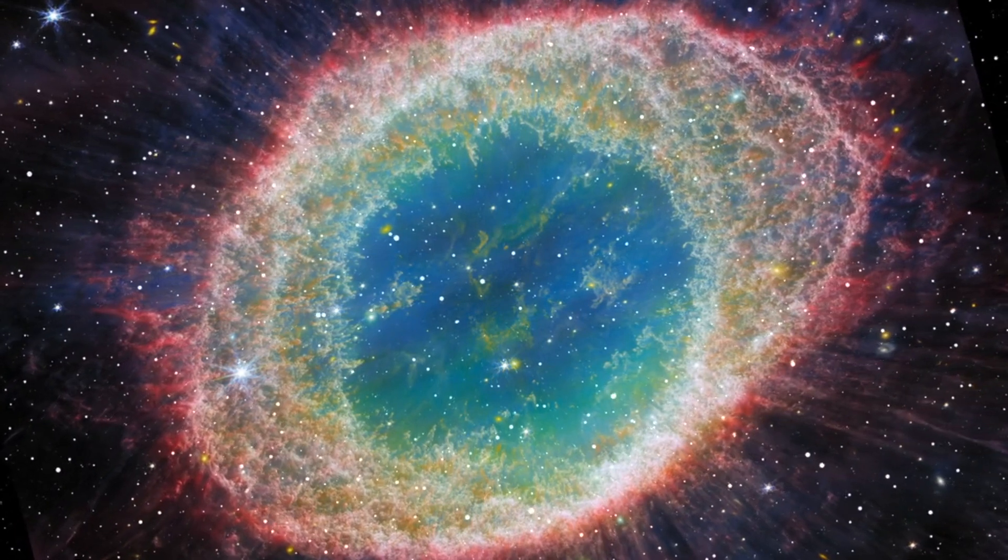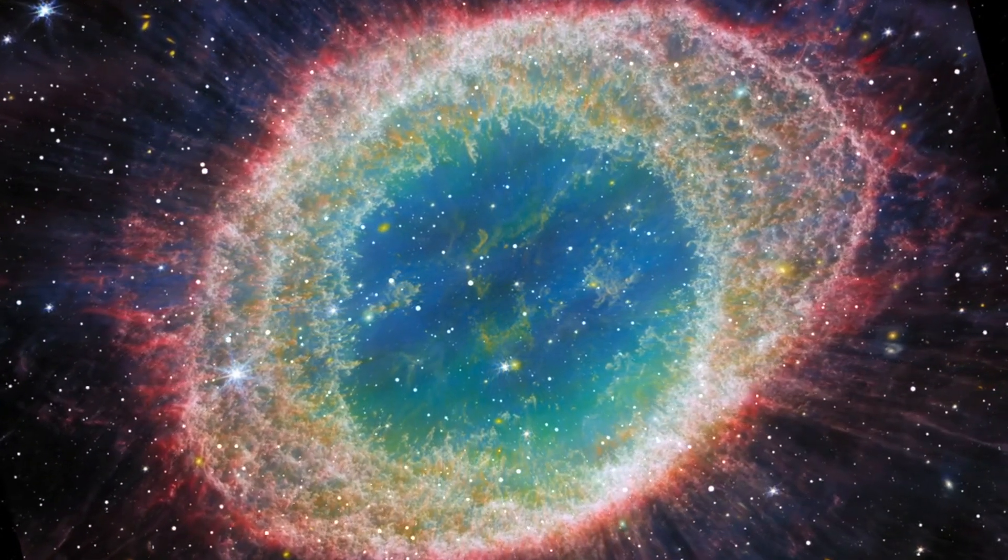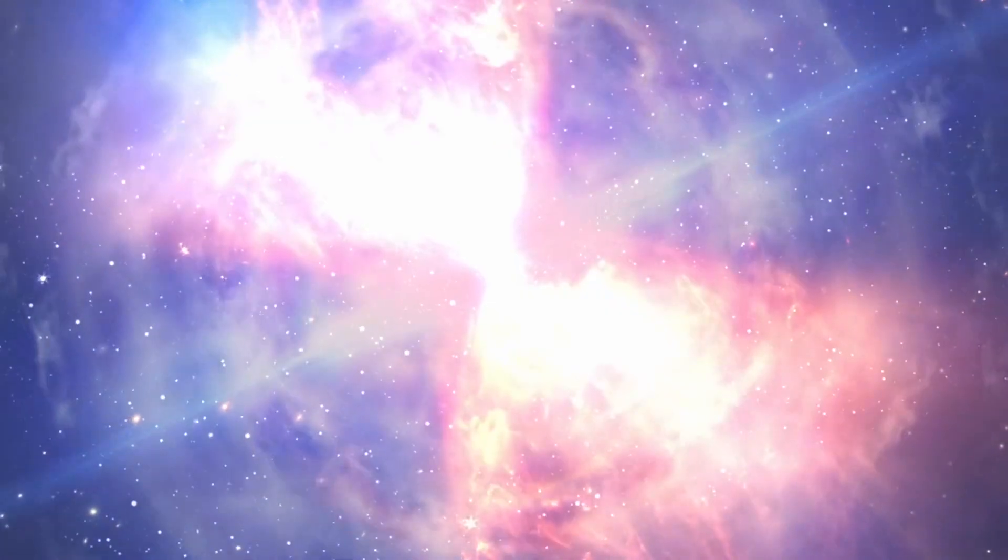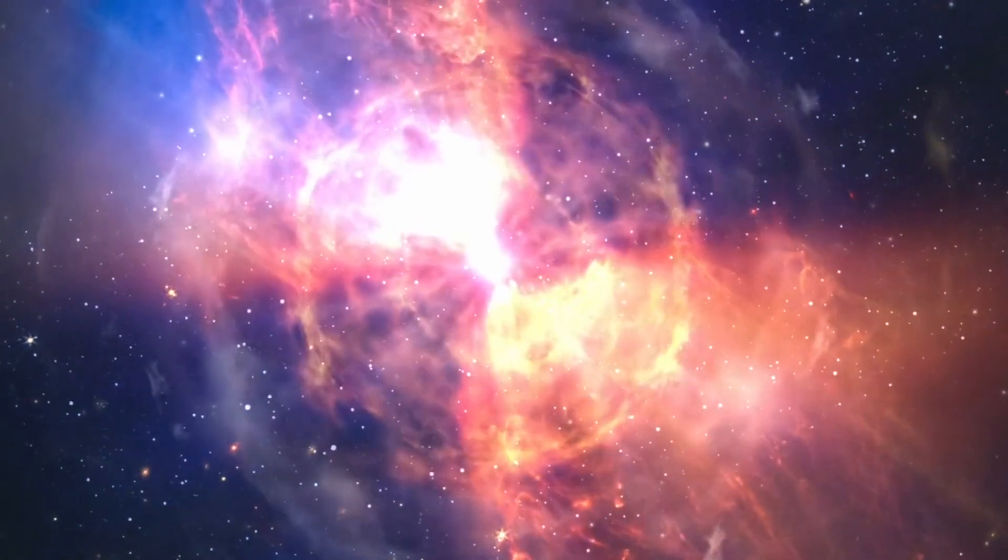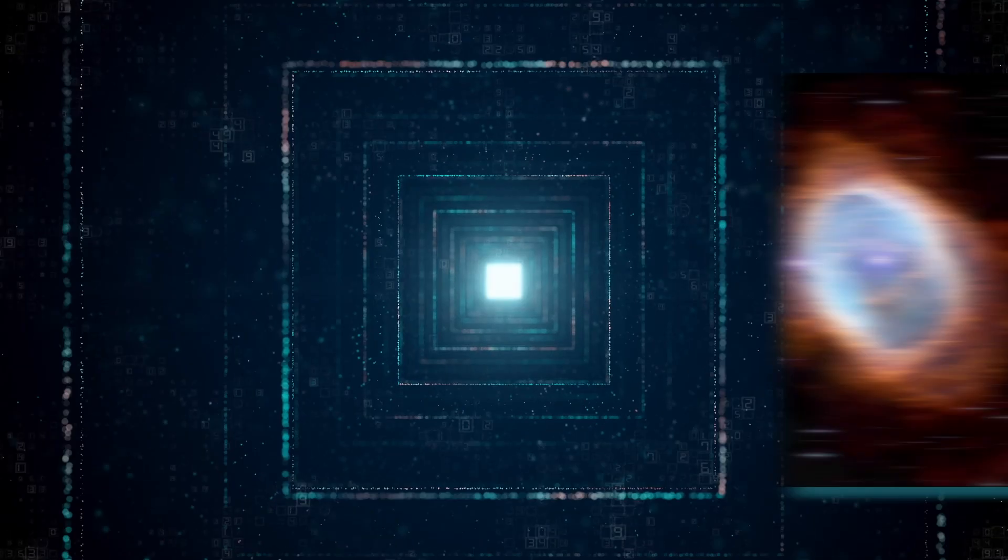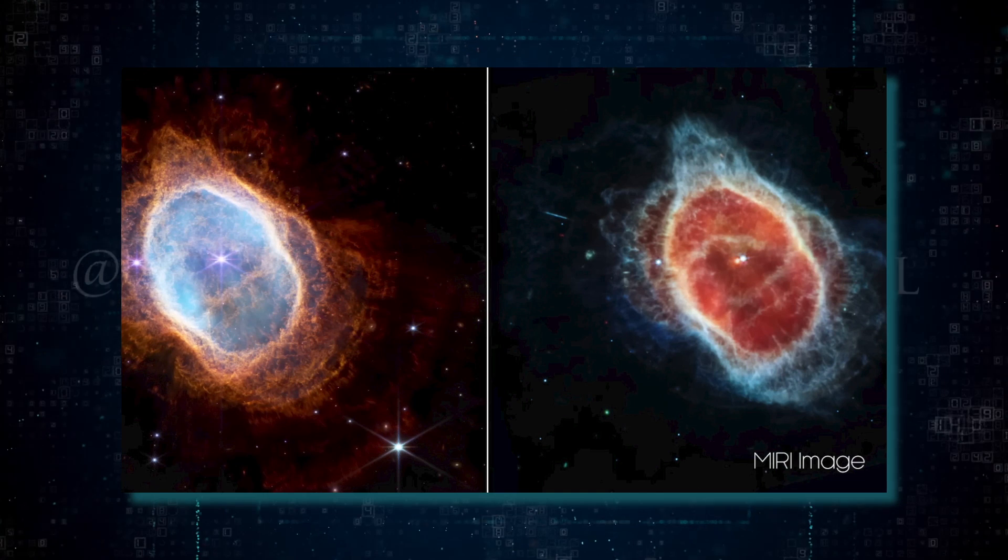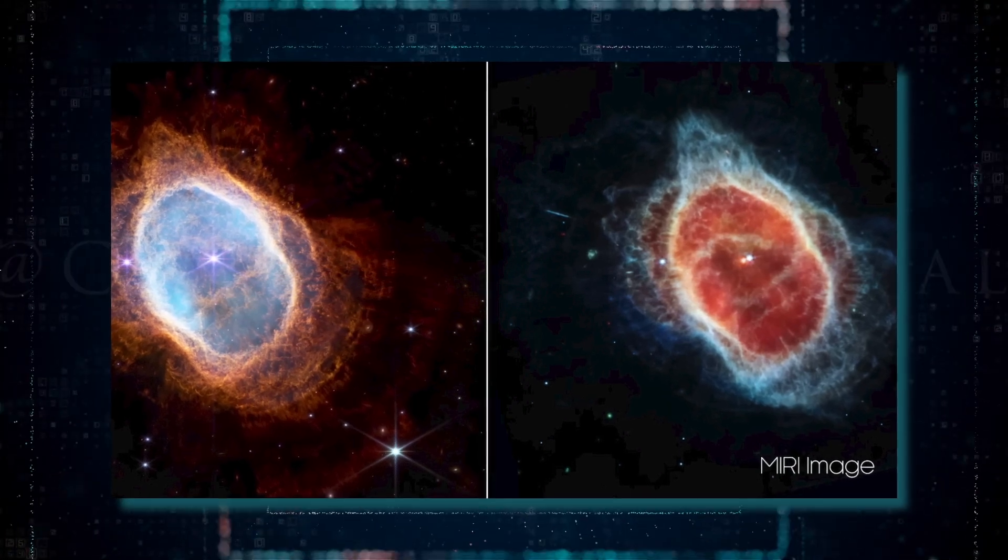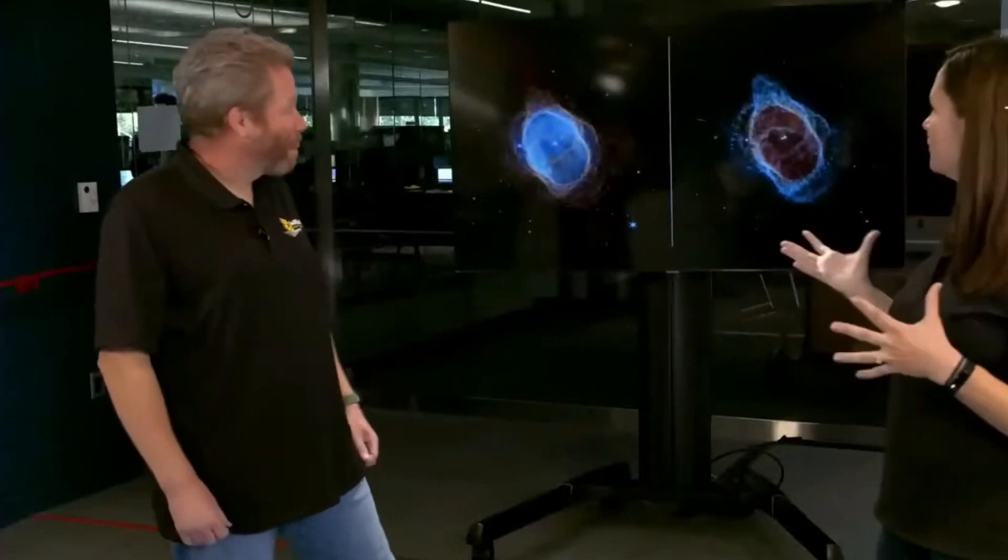Some of the first Webb images released were of the Southern Ring Nebula. This is a planetary nebula, which is a star at the very end of its life. In the MIRI image, we see actually a second star. So we can see a red star and a white star. So these are actually a binary system. And that's the very first time we've seen this binary companion in the Southern Ring Nebula.